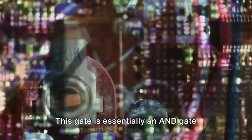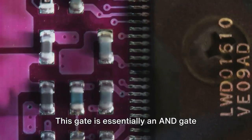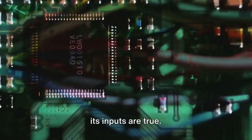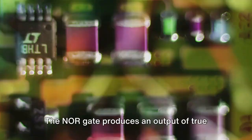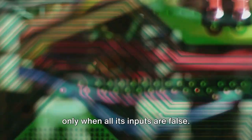Let's move on to the NAND gate. This gate is essentially an AND gate followed by a NOT gate. It produces an output of true unless both its inputs are true. Next in line is the NOR gate. It's like an OR gate followed by a NOT gate. The NOR gate produces an output of true only when all its inputs are false.